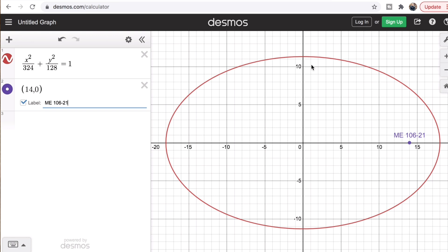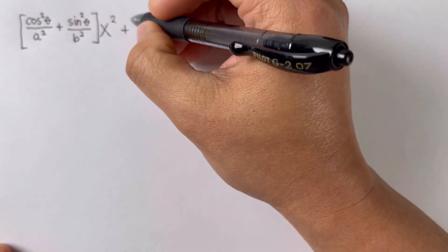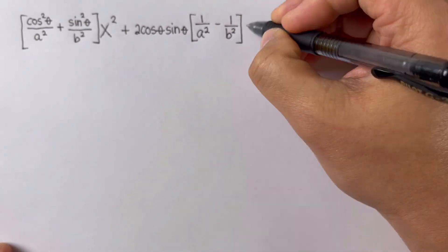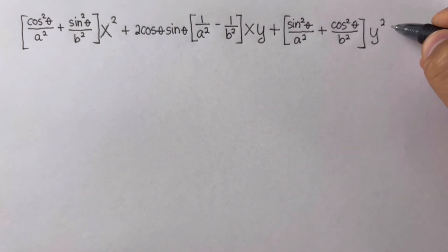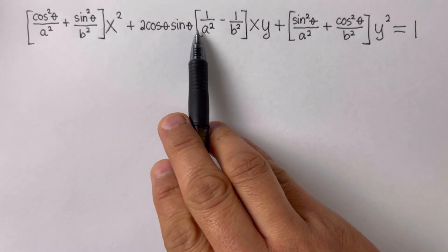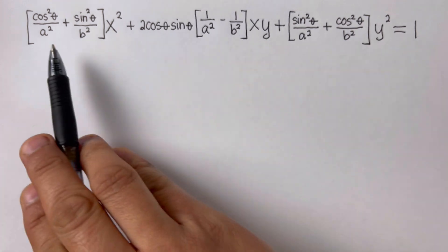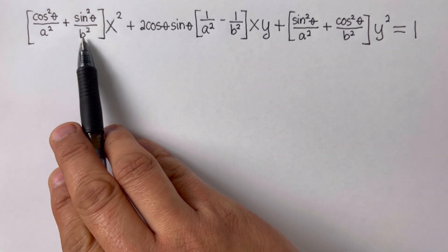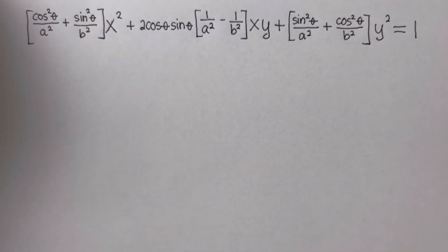In the second problem, the major axis — the x-axis — was rotated 30 degrees from the horizontal. The general equation of an ellipse rotated at any angle theta is given by a specific formula. Since the stellar system was rotated 30 degrees, all theta values are replaced by 30, with a squared = 324 and b squared = 128.